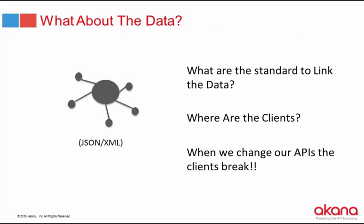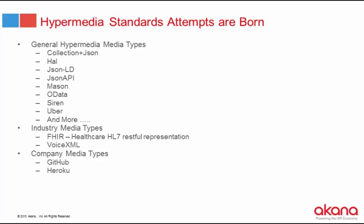But what about the data? Websites are made of two parts — the HTML part and the data part (JSON or XML). If we're supposed to be striving toward HATEOAS, what are the standards to link data? How are you supposed to structure your JSON or XML so that a client can read it, understand it, and you can make changes without breaking your clients? Well, that's the problem — there are no standards, there are no clients. So when we make changes to our APIs, things break.